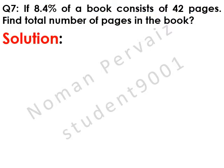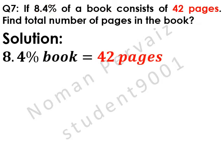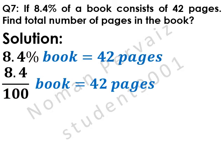Let's see its solution. 8.4% book equals 42 pages. This 8.4 is written as it is. Percent sign is removed by dividing whole term with 100.